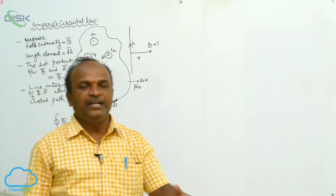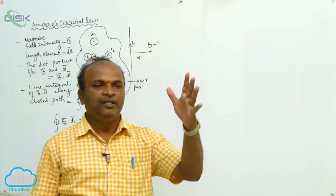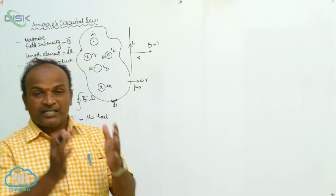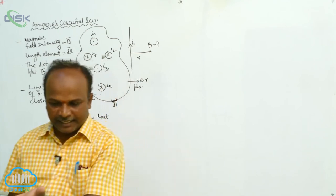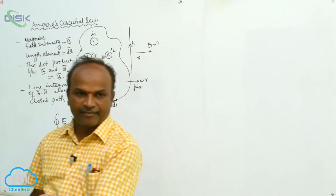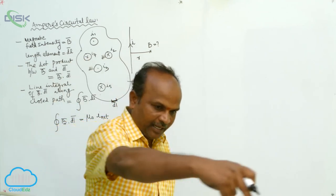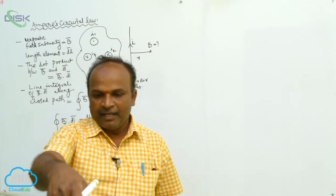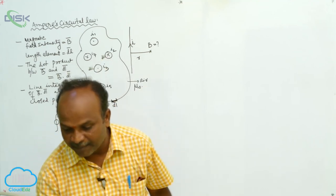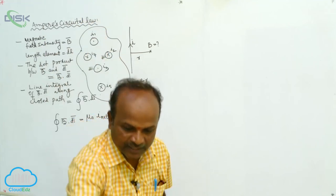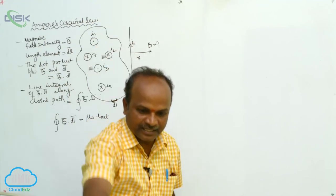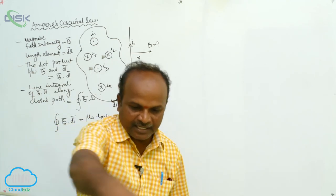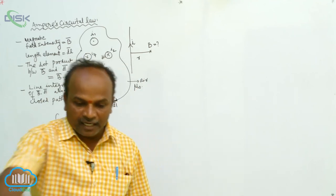By using Ampere's Circuital Law we can calculate the magnetic field induction at a particular point due to the current-carrying conductor. The statement of Ampere's Circuital Law: consider a plane, and in that plane imagine any closed path. Through this closed path, how many currents are piercing? I1, I2, I4, I5 — so many currents are there.